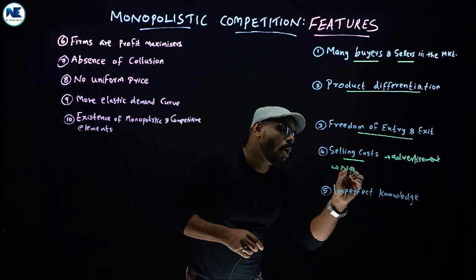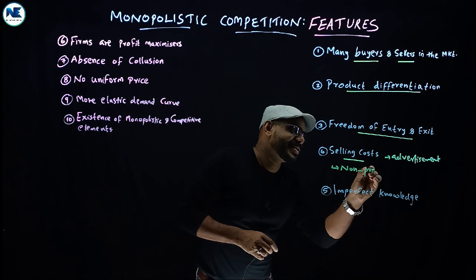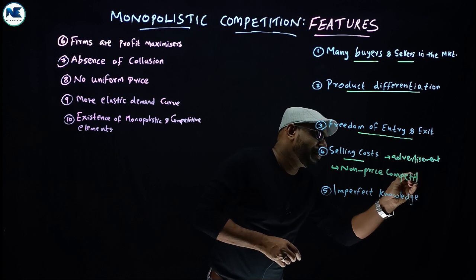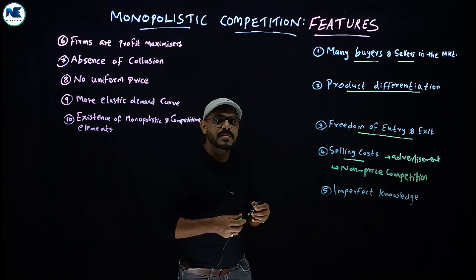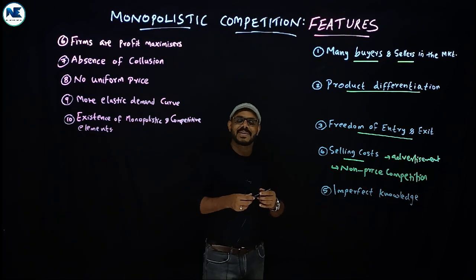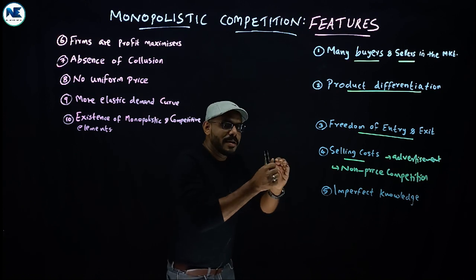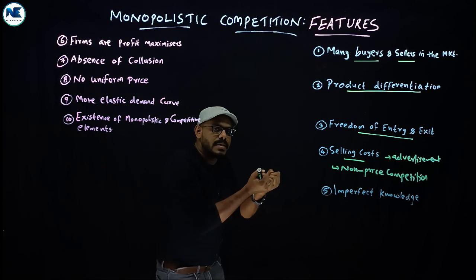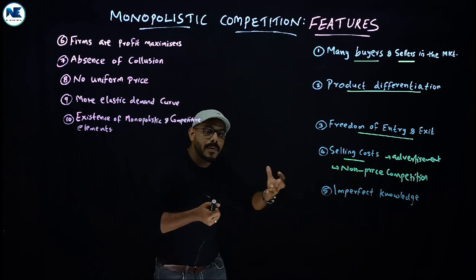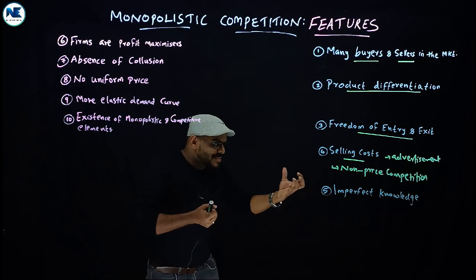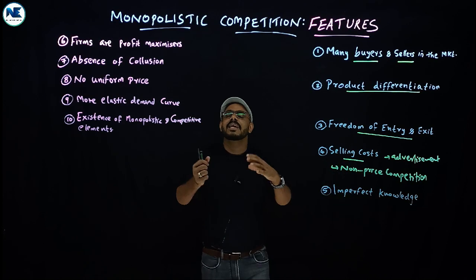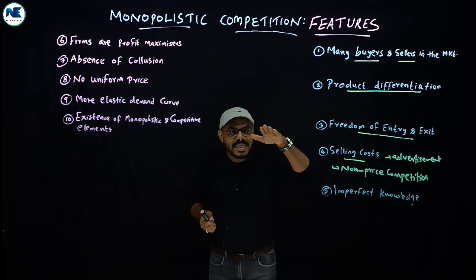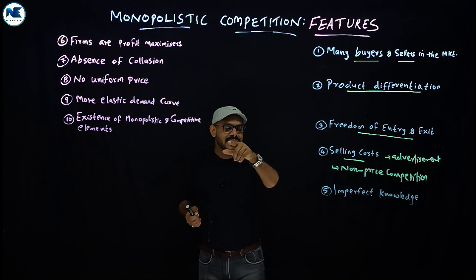The fifth point is non-price competition. In monopolistic competition, different firms are rivals in the market and each firm tries to attract more customers. Rather than using price reduction as the primary competitive tool, firms in monopolistic competition use non-price tools to compete for customers.